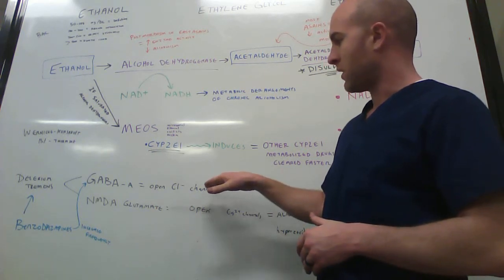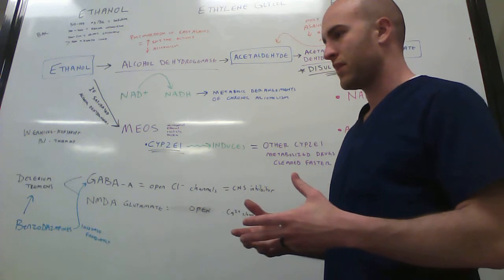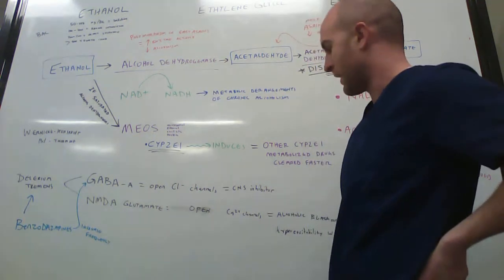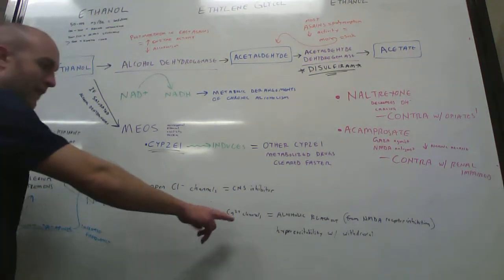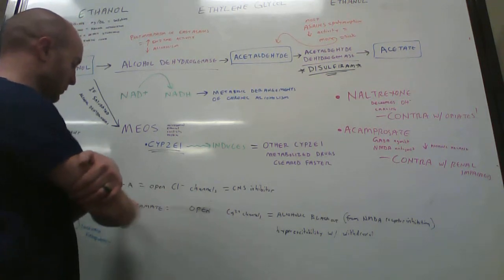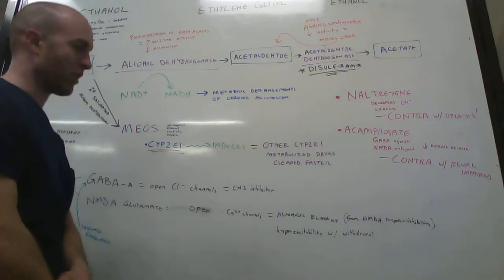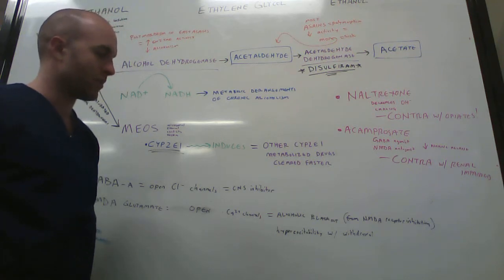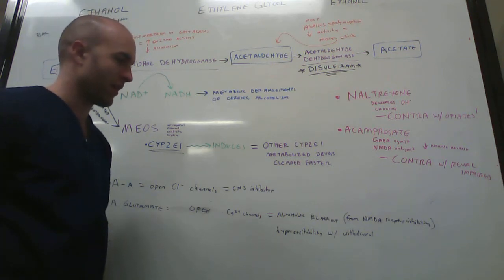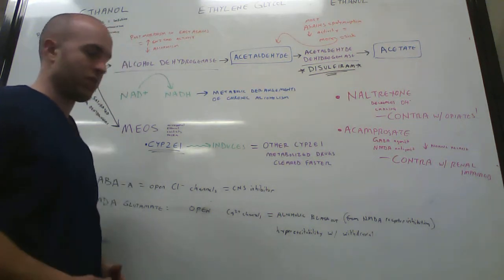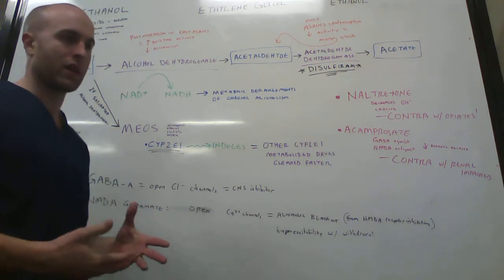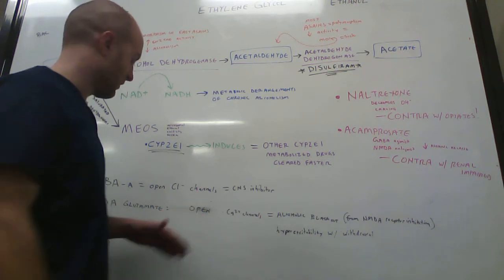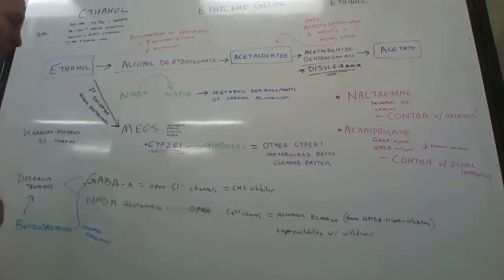Also, what it does is it affects NMDA glutamate, and NMDA glutamate has to do with calcium, and they think that it's this one here, the NMDA glutamate, that is associated with what they call the alcoholic blackout. I think it's from the NMDA receptor inhibition, and also it's theorized to be associated with the hyperexcitability with withdrawal. So when an alcoholic, chronic alcoholic, stops taking alcohol, they get really excitable because of the effect that alcohol has had on their NMDA glutamate receptors.